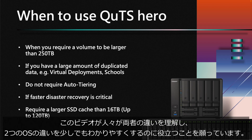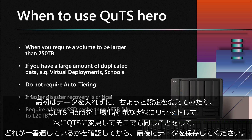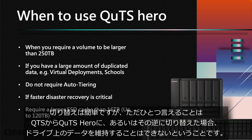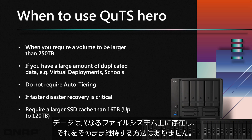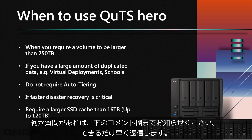Hopefully this video helps demystify the differences between the two operating systems. If your NAS supports both, I recommend trying each one before committing data — set it up, change some settings, do some performance testing, then factory reset and try the other OS. Once you've decided, then load your data in. Note: you cannot keep data on the drives when switching between QTS and QUTS Hero, as they use different file systems. Decide before you've filled it with terabytes of data. Any questions, please leave them in the comments below.